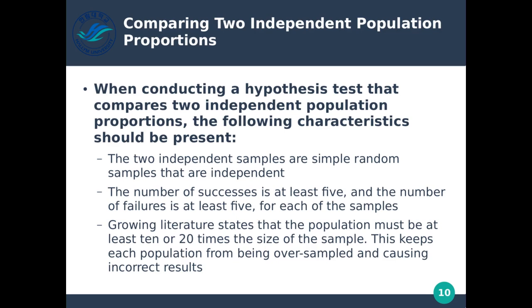When conducting a hypothesis test that compares two independent population proportions, the following characteristics should be present: the two independent samples are simple random samples that are independent; the number of successes is at least five and the number of failures is at least five for each sample; and the population must be at least 10 to 20 times the size of the sample, to keep each population from being oversampled and causing incorrect results.